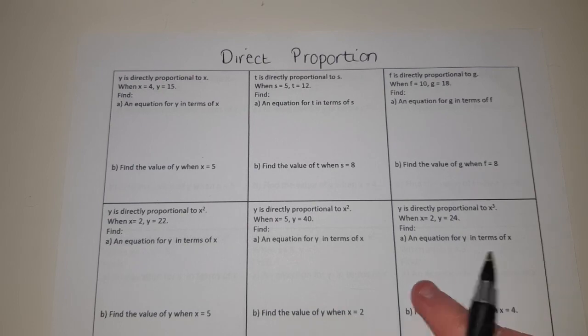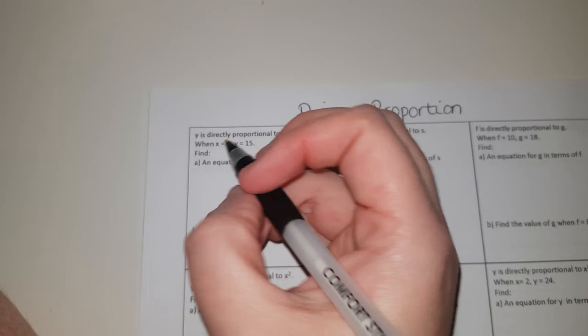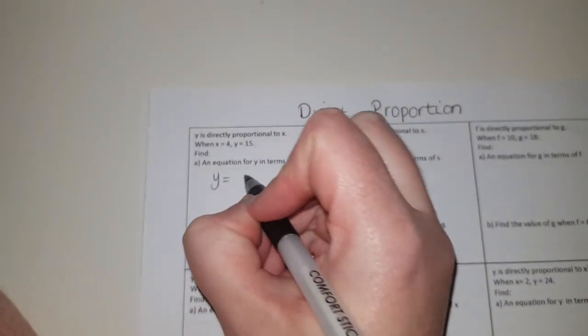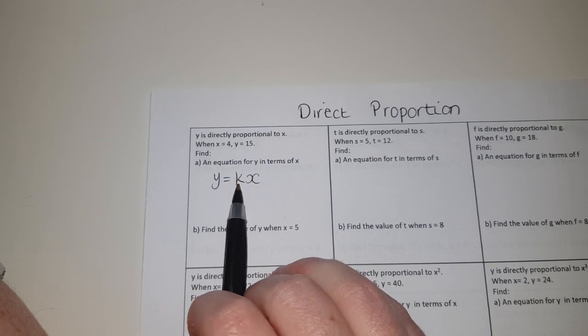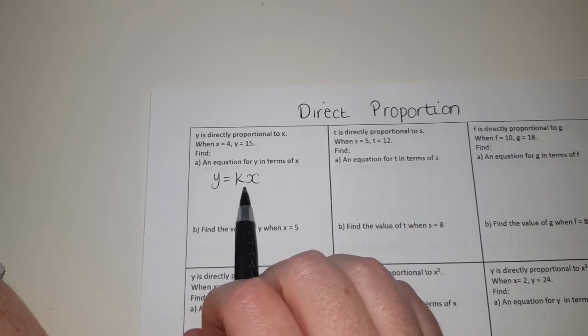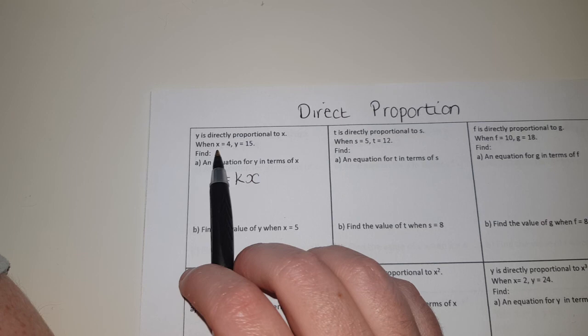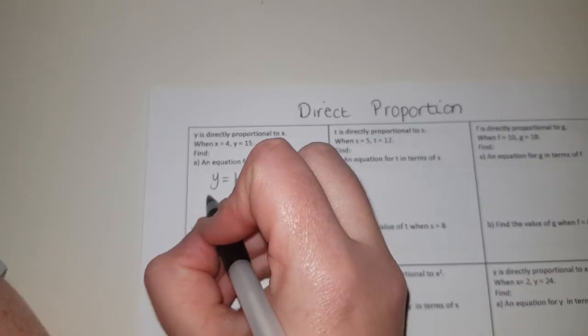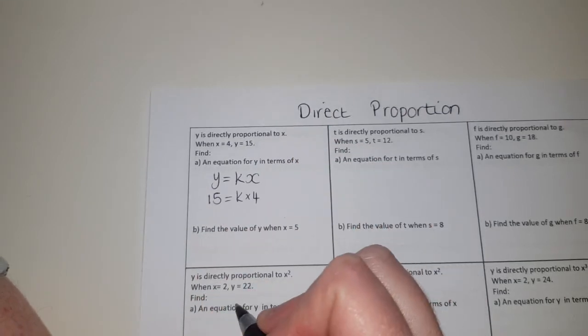What we've got is y is directly proportional to x. That means that y has to be equal to some multiple of x. Now in terms of the multiple we always use the letter k for proportion. That doesn't matter if it's direct or inverse, you always use the letter k. It gives you to begin with x equals 4 when y equals 15, so 15 is equal to k times 4.